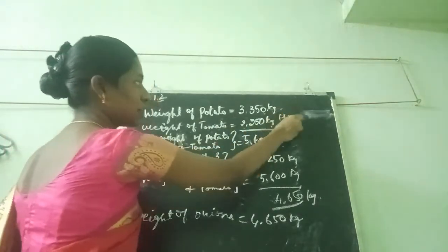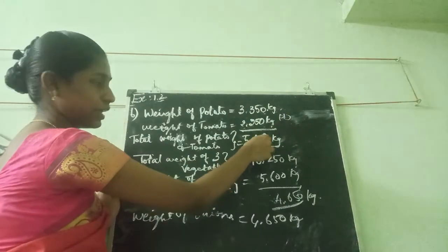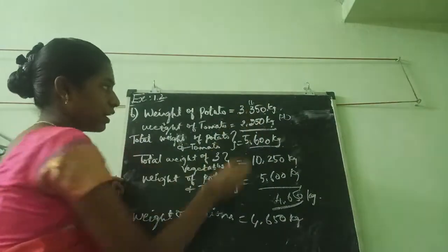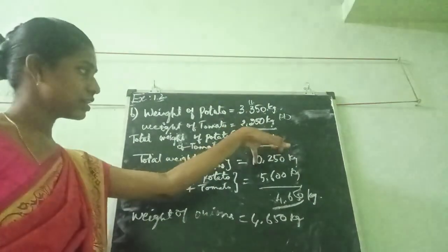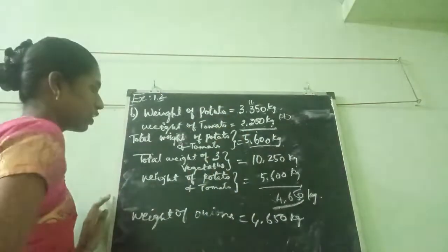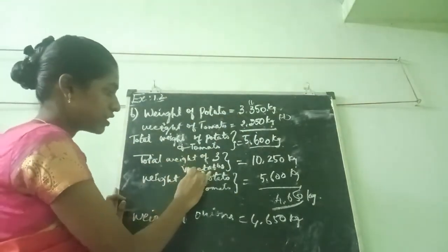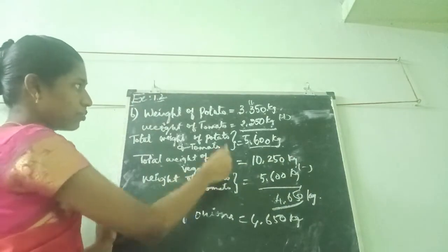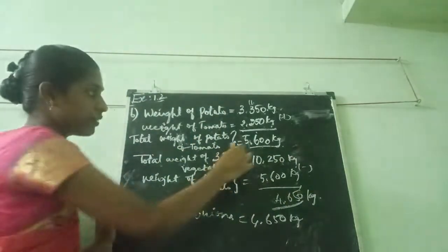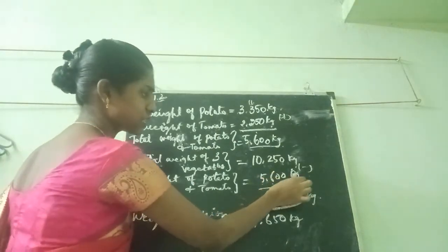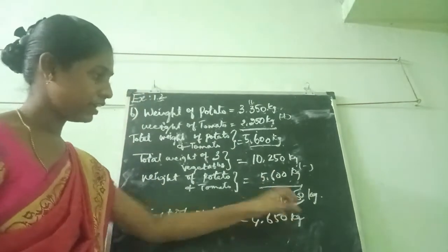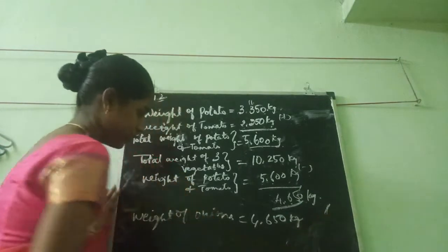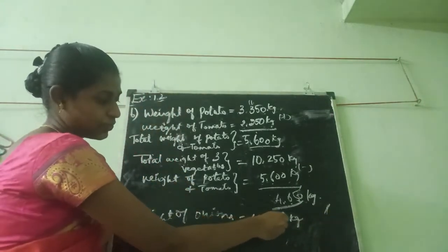Now we want to find the onion weight. The total weight of 3 vegetables is 10.50 kg. I am minusing the weight of potato and tomato (5.60 kg). Weight of onion: 0 minus 0 is 0; 5 minus 0 is 5; then carrying — 12 minus 6 is 6; 9 minus 5 is 4. The answer is 4.650 kg. Weight of onion is 4.650 kg.